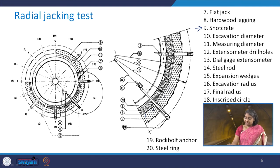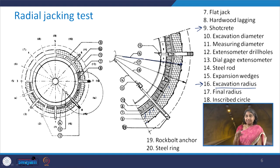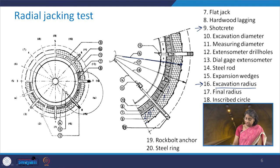The excavated diameter is indicated by component 10 or 16, which shows the excavation radius. This is the excavated zone, on top of which the shotcrete layer has been applied — component 9 is the shotcrete zone.